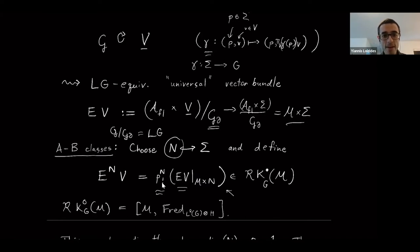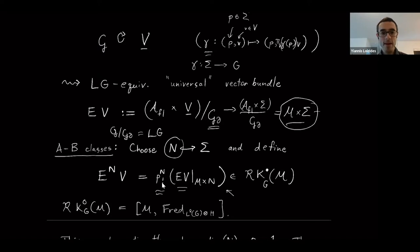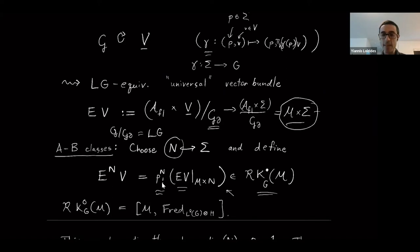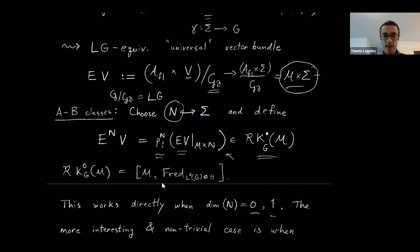Right before the break I was mentioning that we're interested in these Atiyah-Bott classes. We have this Hamiltonian loop group space — flat connections modulo gauge transformations that are the identity along the boundary. We built this finite-dimensional vector bundle over the product M cross Sigma; it plays the role of a universal bundle. This kind of thing also appears in Teleman and Woodward in a slightly different form. The idea of the Atiyah-Bott classes is to pick submanifolds of Sigma, take this vector bundle, restrict to the submanifold, and then push forward down onto M, so that gives us K-theory classes on M in the sense of non-compactly supported or representable K-theory.